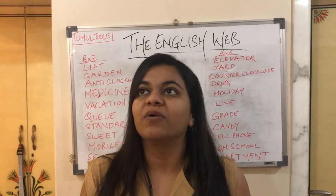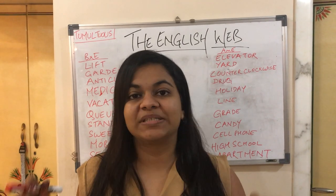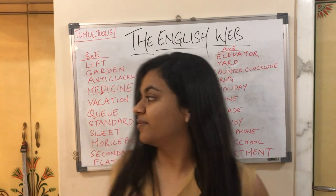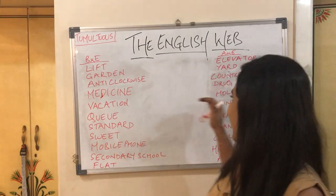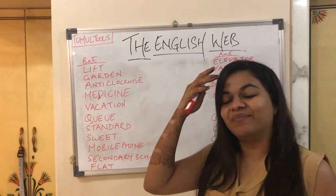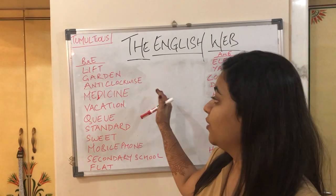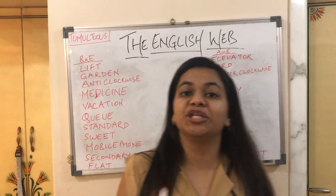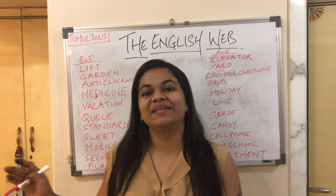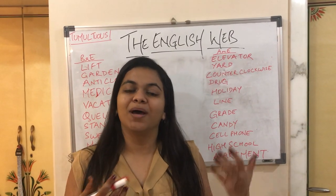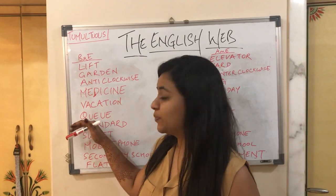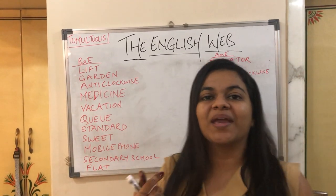The fifth word is 'vacation.' For example: I would love to go on a vacation to Paris, or go skiing in a snowy region. That's 'vacation' in British English, whereas 'holiday' is the American English word. We often use these words interchangeably without realizing that 'vacation' is British English and 'holiday' is American English.